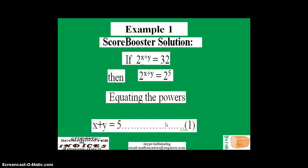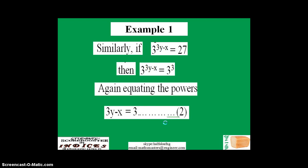So looking at the second equation that was given in the question: similarly, if 3 raised to power 3y minus x equals 27, we can also factorize this one.